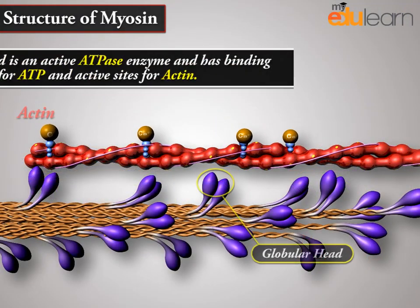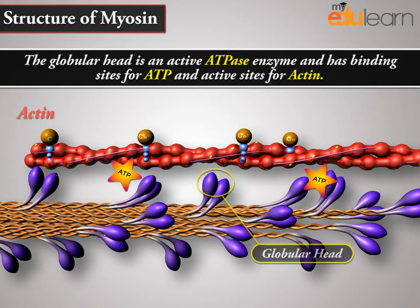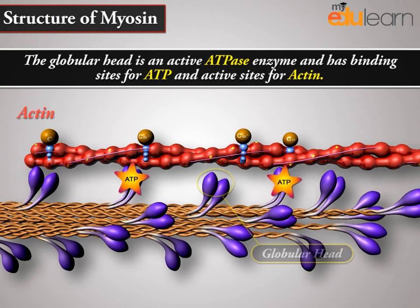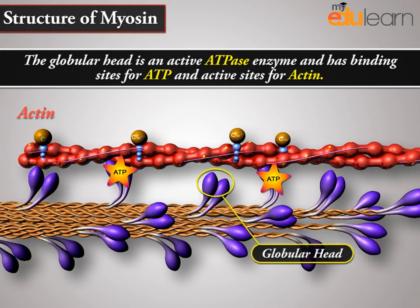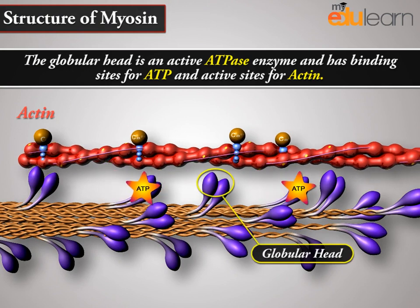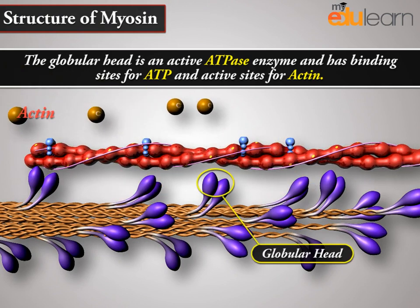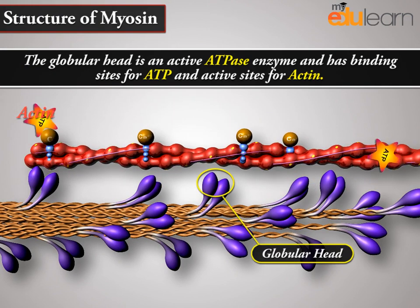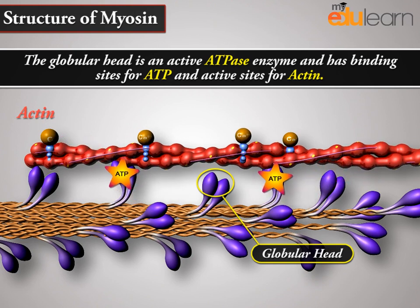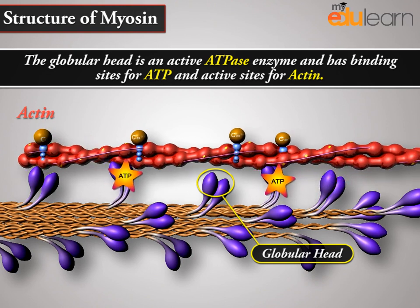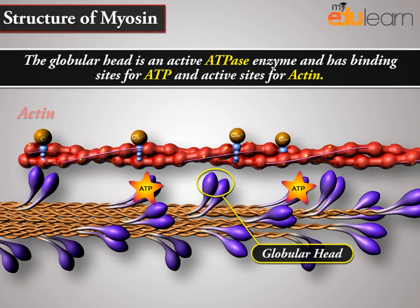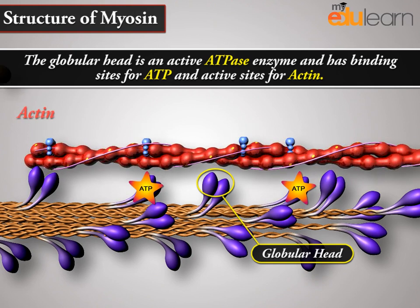The globular head is an active ATPase enzyme and has binding sites for ATP and active sites for actin.